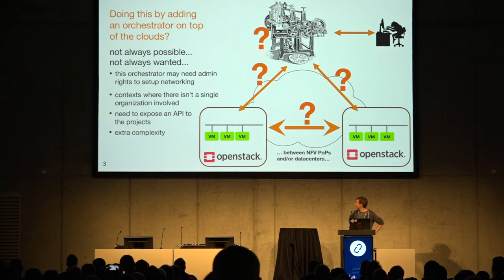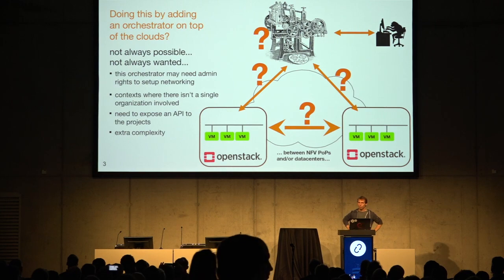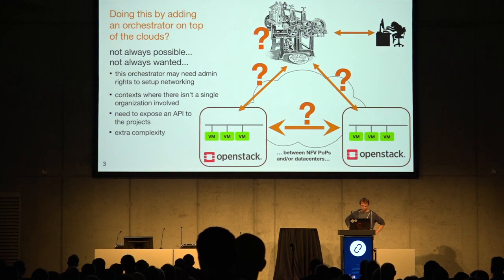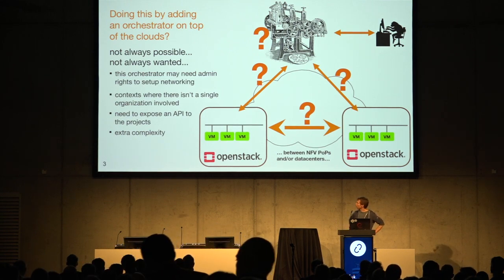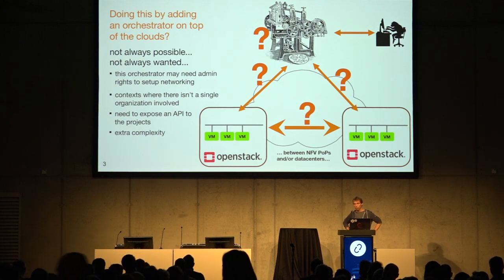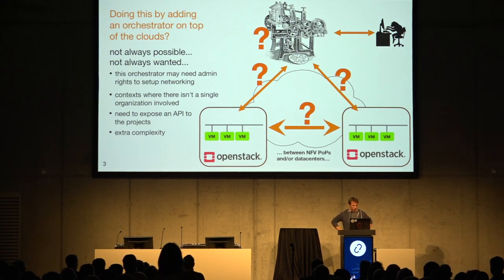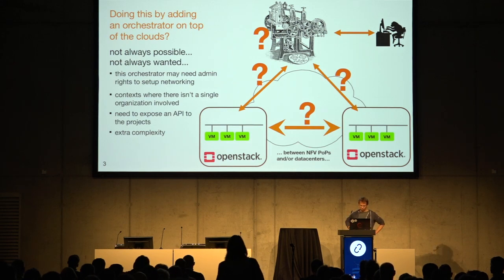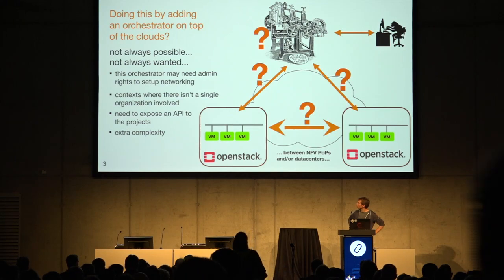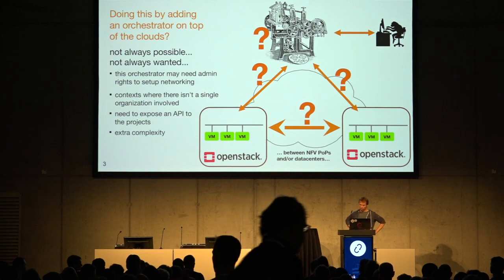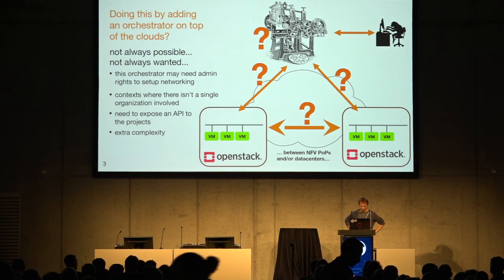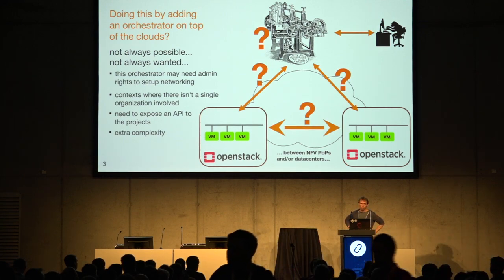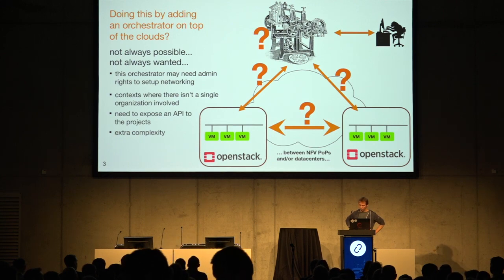What I'm going to discuss is a solution with these three properties. One existing solution involves adding an orchestrator on top of the different clouds to interconnect resources. This can be viable, but it's not always possible or wanted — for various reasons. The orchestrator may need admin rights to set up networking, which is complicated when different organizations handle different clouds. It also needs to expose an API to projects, and whatever you do, you end up with extra complexity from this additional orchestrator. So we wanted to explore a solution that would work without introducing an orchestrator.